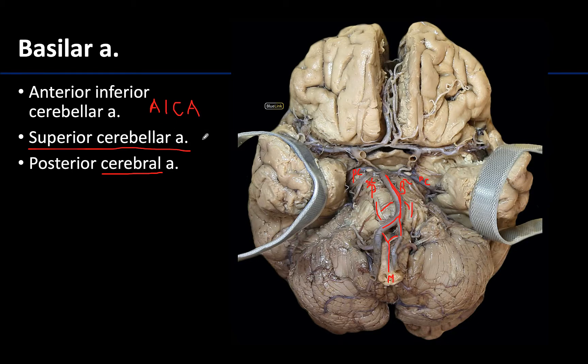Before we move on, I want to note the cranial nerve here that is between these two arteries — that is cranial nerve 3, your oculomotor nerve. The close relationship between the oculomotor nerve and the superior cerebellar and the posterior cerebral is a very important anatomical relationship. I can almost promise you that will show up in some form of assessment, so make sure you can identify it in relationship to these two arteries.